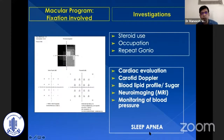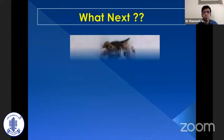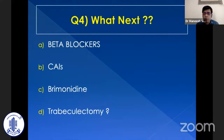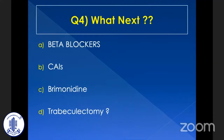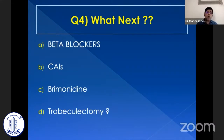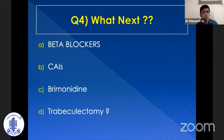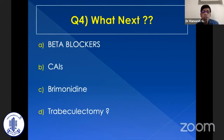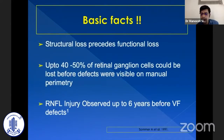A detailed workup is crucial because these patients keep progressing. If investigations don't pinpoint a cause, you still need to treat. If the patient is already on prostaglandin and you want to add an adjunct, options include beta blockers, carbonic anhydrase inhibitors, or brimonidine. Trabeculectomy is not the first option when pressure is already well controlled. Beta blockers are not ideal because they affect optic nerve perfusion. Carbonic anhydrase inhibitors for their role in ocular blood flow, and brimonidine for its hypothetical neuroprotective role, may be better adjuncts compared to beta blockers.